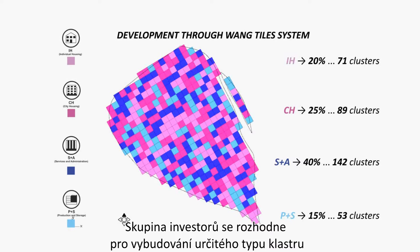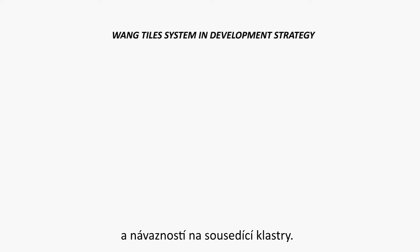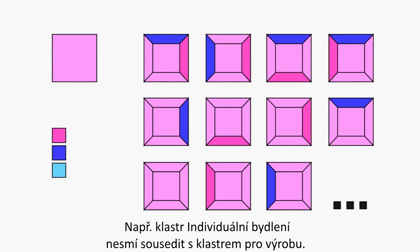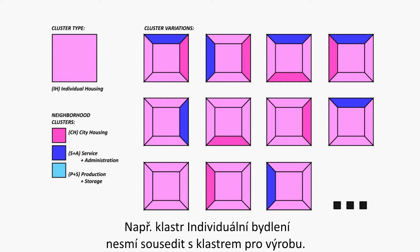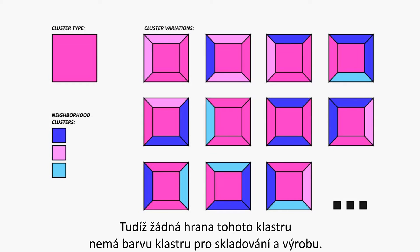A group of investors decides to build a certain type of cluster, and its specific predefined variant based on relationships and connections to neighboring clusters. For example, an individual housing cluster may not be adjacent to a cluster for storage and production. Thus, no edge of this cluster has the color of a production cluster.